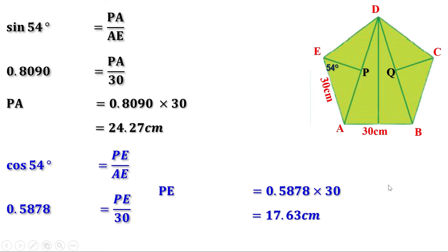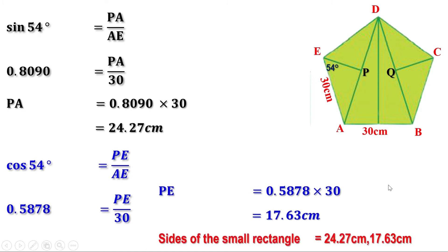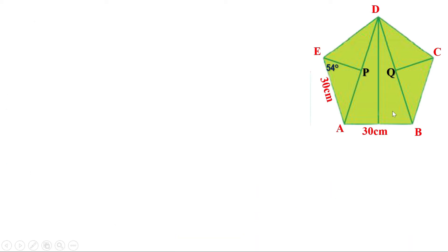Therefore, we can say sides of the small rectangle are 24.27 centimeters and 17.63 centimeters. Now we have to find the sides of the large rectangle. These are the triangles obtained from the large rectangle and we know they are equal.